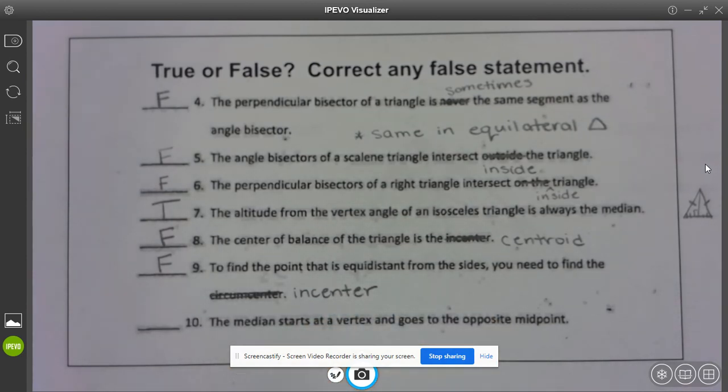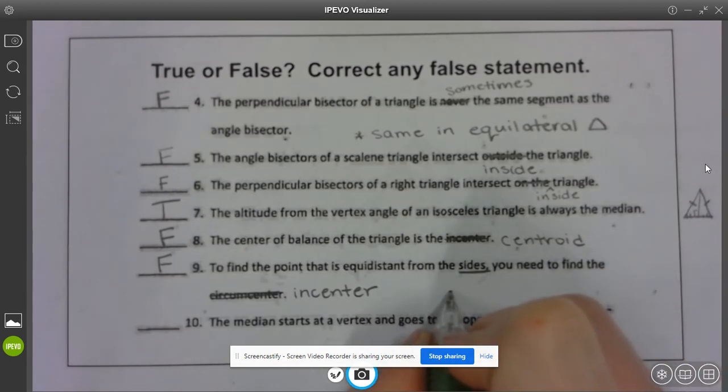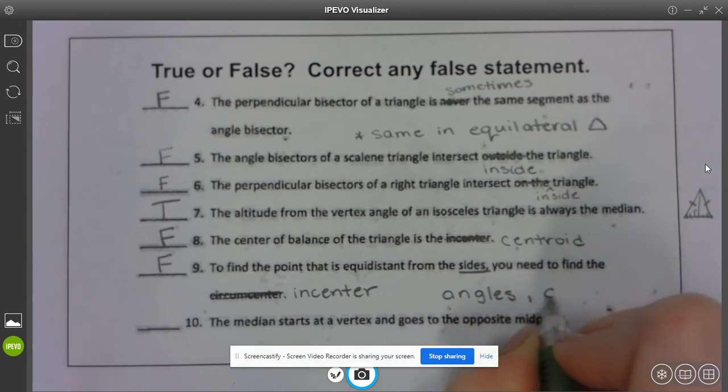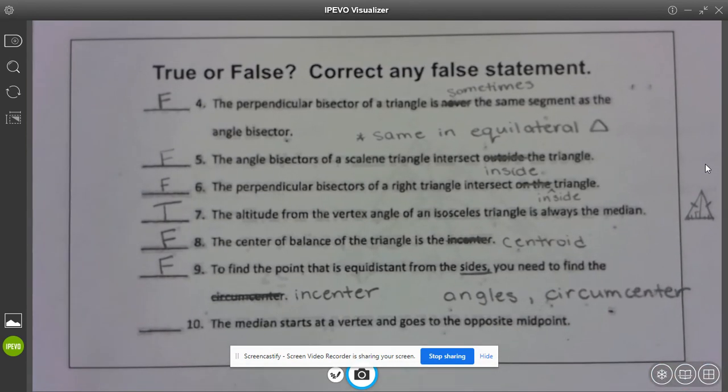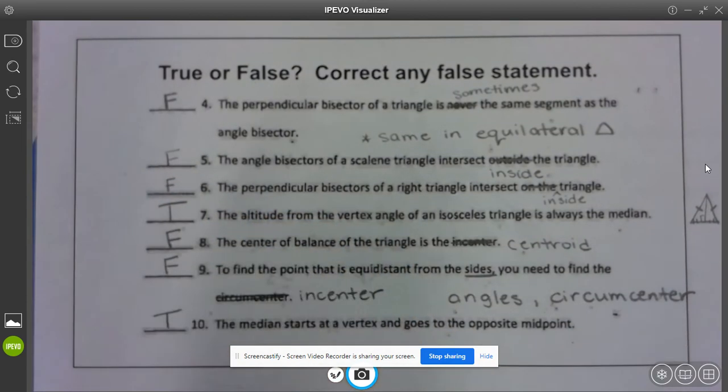So I could change this in one of two ways. I could change this to incenter, or if I changed sides I could do angles and circumcenter. And then lastly the median starts at a vertex and goes to the opposite midpoint. That's actually true so we only had two true statements in this one.